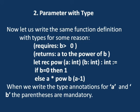The second type is parameter with type. We write the same function definition but now specify types: power(a: Integer, b: Integer): Integer. Here a is integer, b is integer, and the return value is also integer. When writing type annotations for a and b, the parentheses are mandatory.